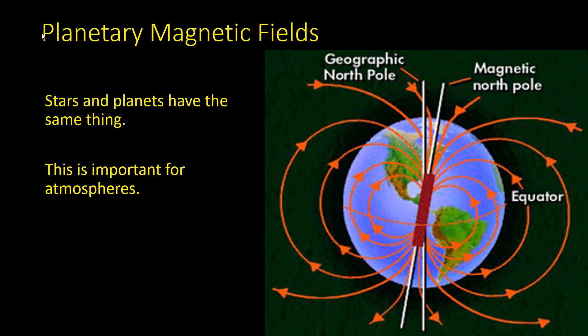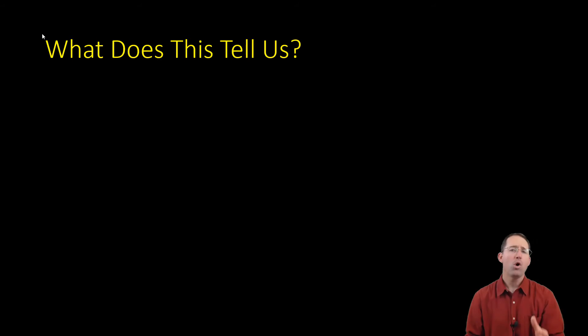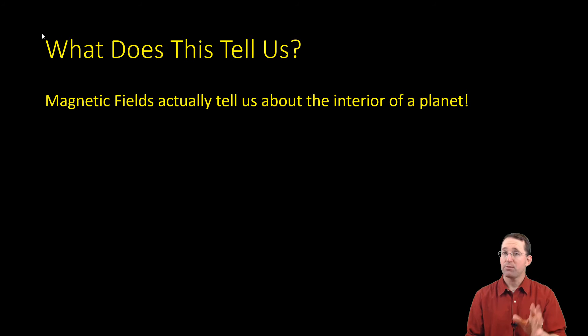Most planets will have a magnetic field, but not all of them. And this is important for atmospheres, because remember, if a planet does not have a magnetic field protecting it from the solar wind coming from the sun, that solar wind will eventually strip away the atmosphere from that terrestrial planet. Now, what exactly do magnetic fields tell us? They do tell us something very important about what's happening inside of a planet.